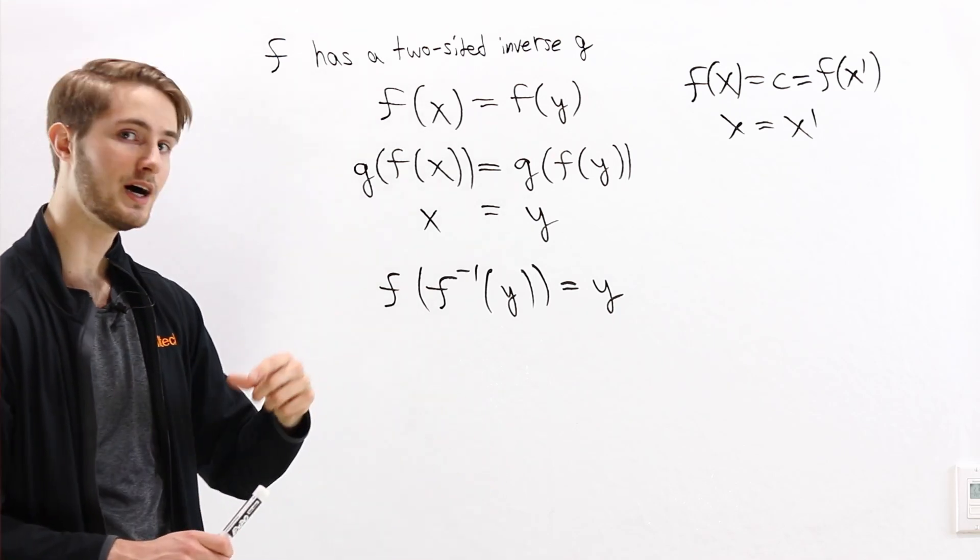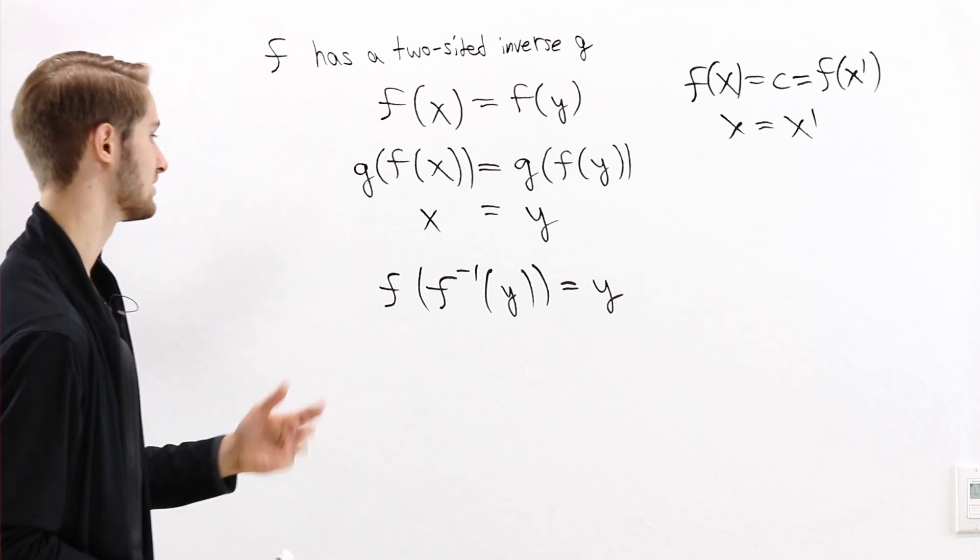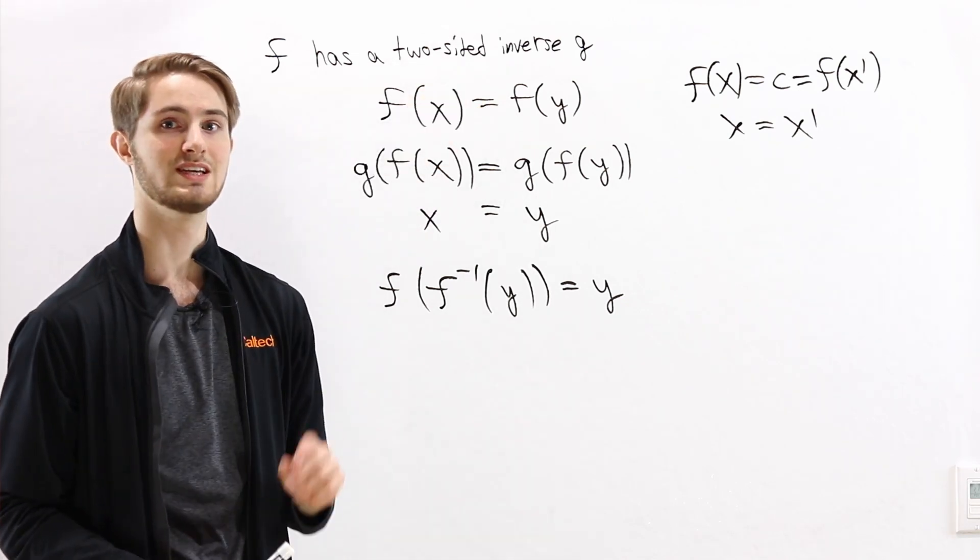So because there is at most one right inverse, there's also at most one two-sided inverse, which means our two-sided inverse is unique.